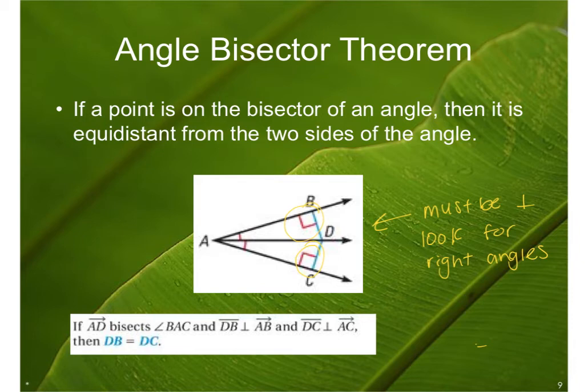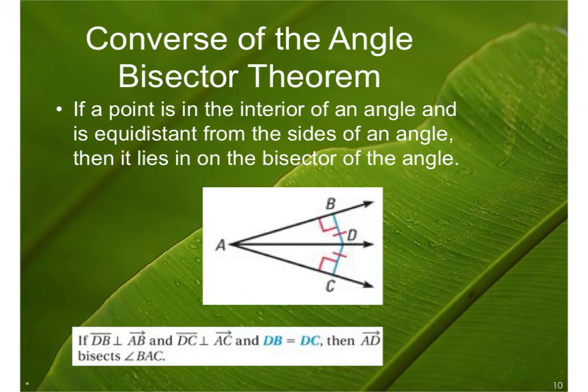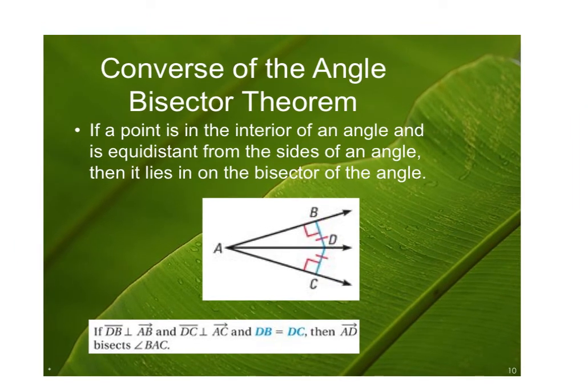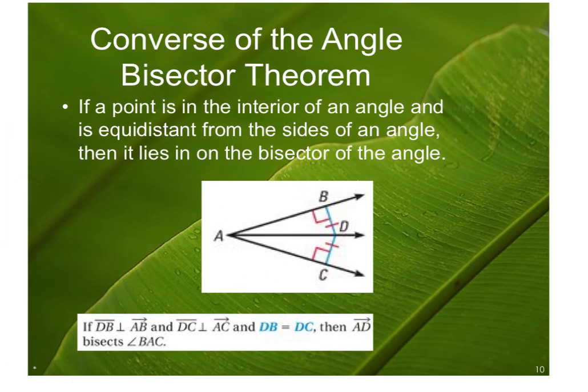The converse of the angle bisector theorem: if a point is on the interior of an angle and is equidistant from the sides of the angle, then it lies on the bisector of the angle. So if BD is congruent to DC, then ray AD must cut angle BAC in half — AD is the bisector.